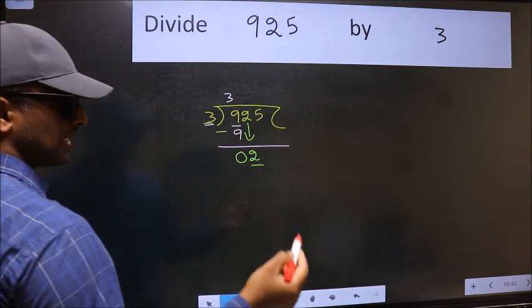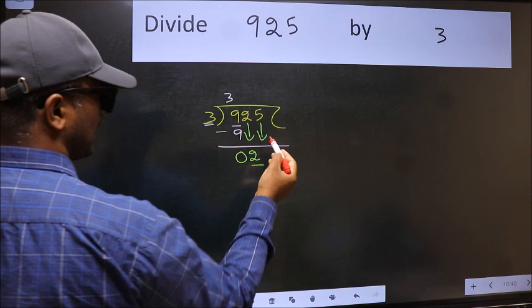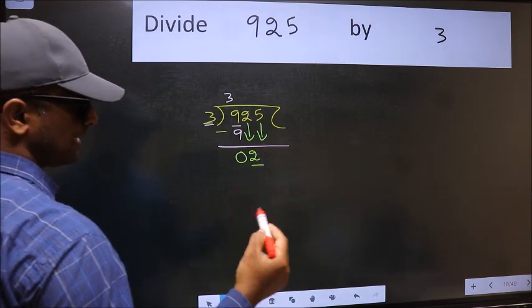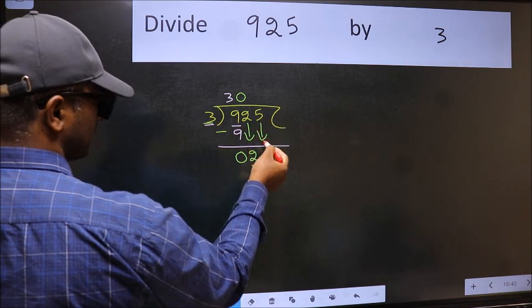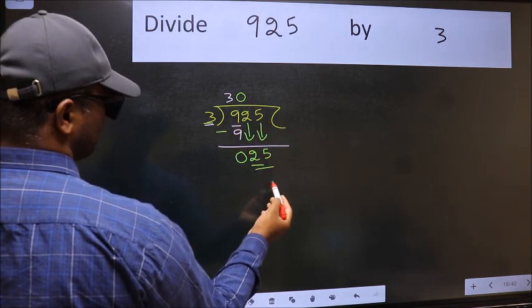So we should bring down the second number. And the rule to bring down the second number is we should put 0 here. Then only we can bring this number down. Now 25.